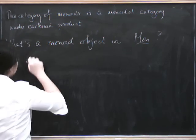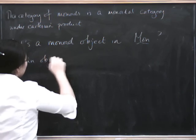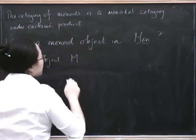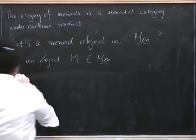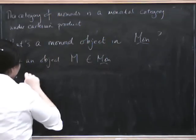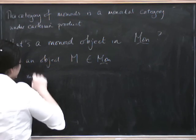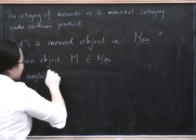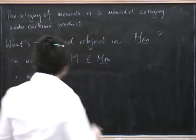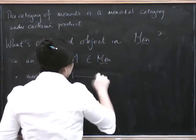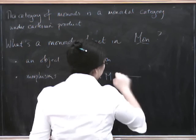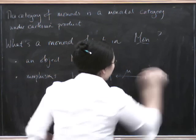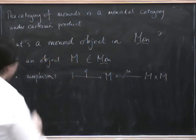So we've got to have an object M, i.e. a monoid. Now we've got to have morphisms—what are the morphisms in this category? They are monoid morphisms. So we've got to have morphisms eta from 1 to M, and mu from M cross M to M,